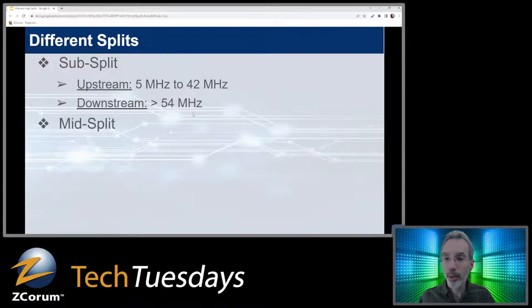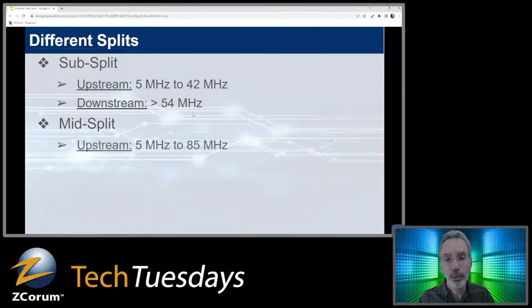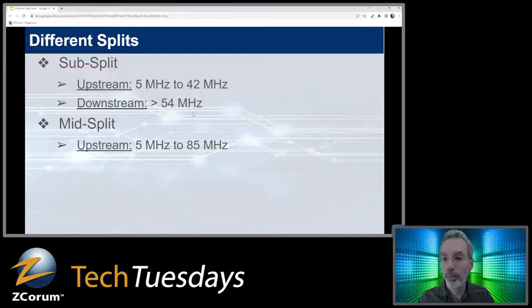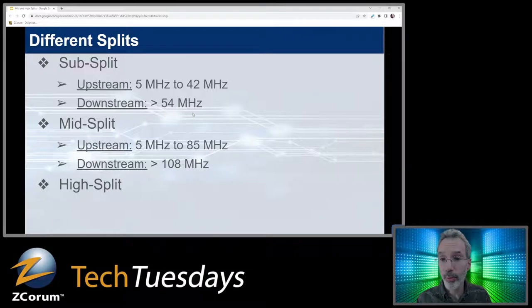A lot of providers started doing mid splits — more people moved to this during and after the pandemic to increase upstream. A mid split takes you from 5 MHz up to 85 MHz upstream, adding quite a bit of upstream bandwidth. The downstream then starts at 108 MHz and goes up from there. Then there are high splits — fewer operators are doing this, but some are. The high split gives you even more upstream: 5 MHz up to 204 MHz, and downstream starting at 258 MHz.